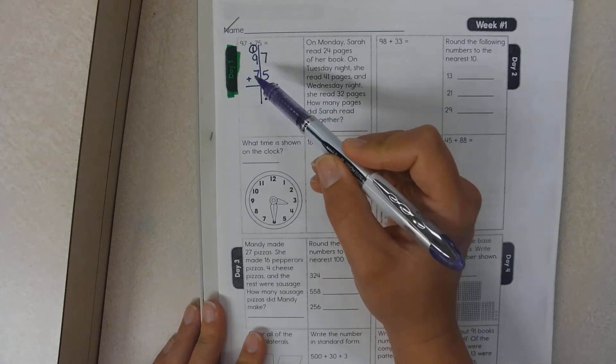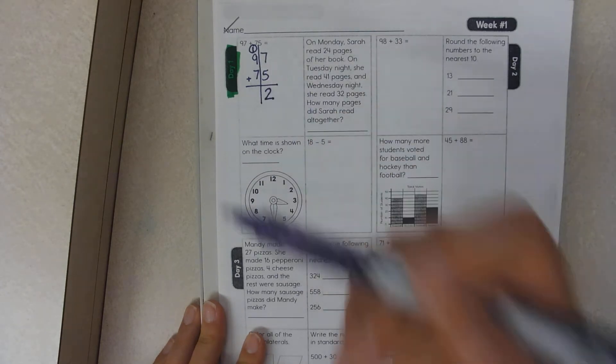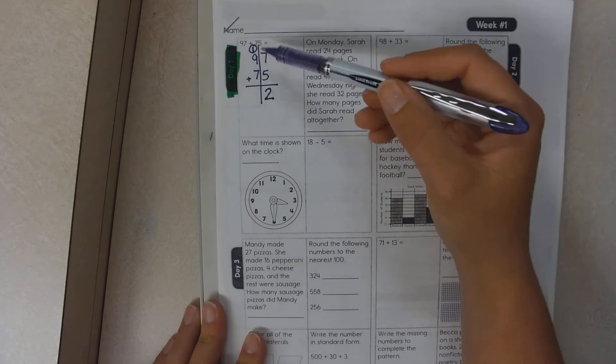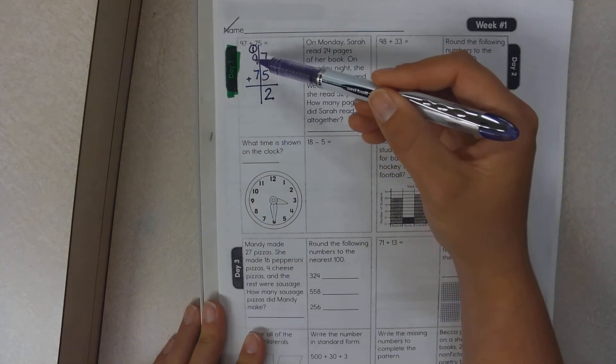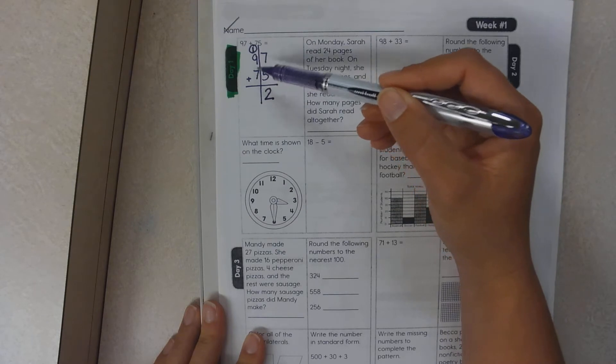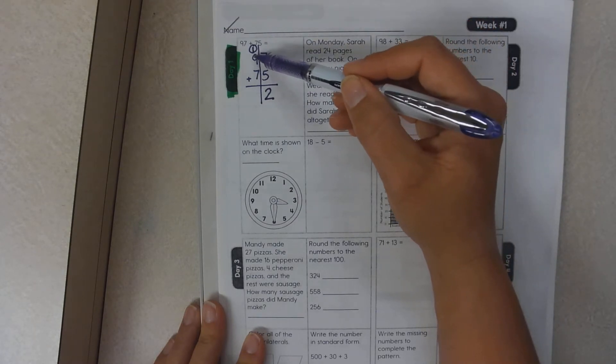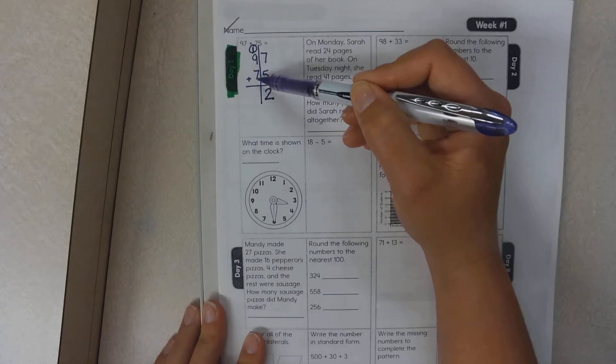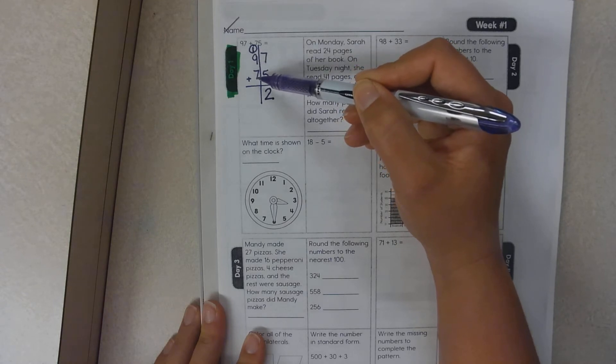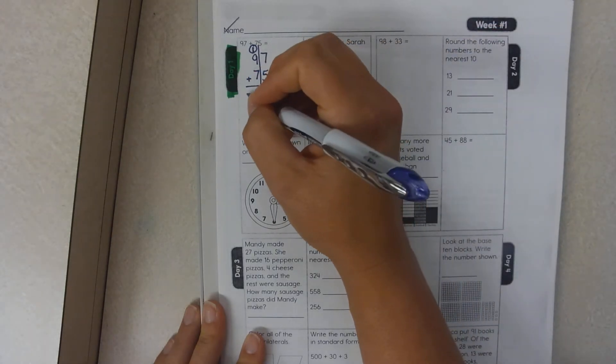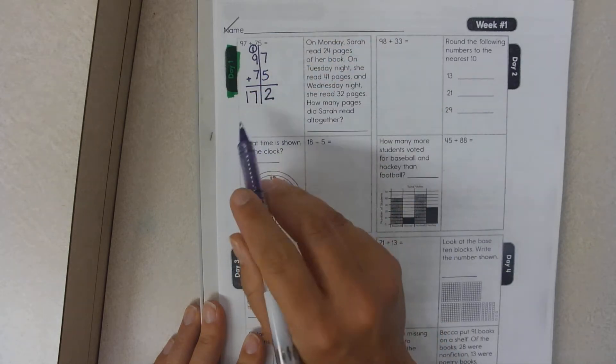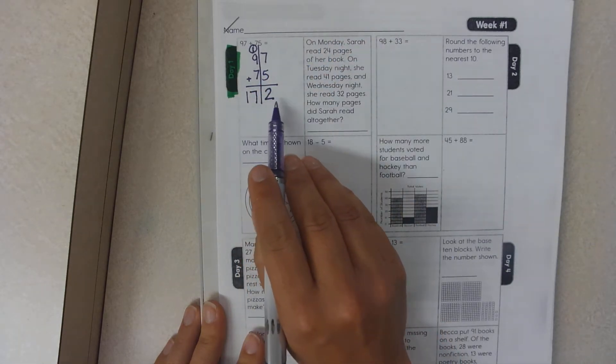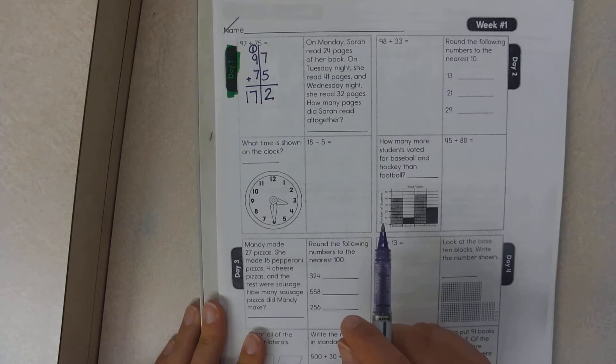Now we need to add our tens place. As I'm thinking about this, I have one ten, nine tens which is 90, and 70. So 90 plus ten is 100. 100 plus 70 is 170. So 172 is your answer.